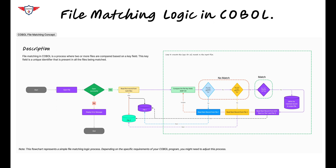Now let's talk about the flow diagram that explains the underlying working principle of file matching logic in COBOL. Start and End indicate the starting and ending of the process or the program. After that, you have the Open File section, where you're going to open the file in the desired mode. In case a file is opened successfully, you proceed with further processing. In case the file is not opened due to some error, you display an error message and terminate the processing of the program.